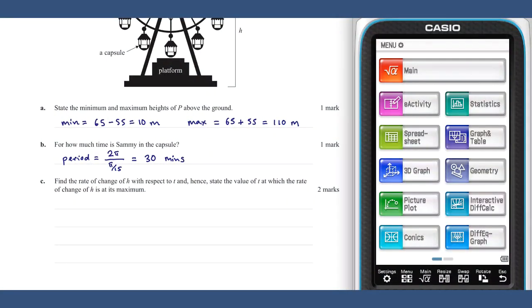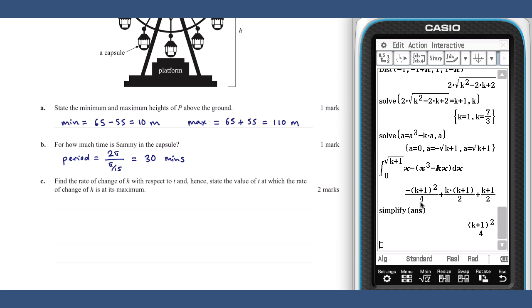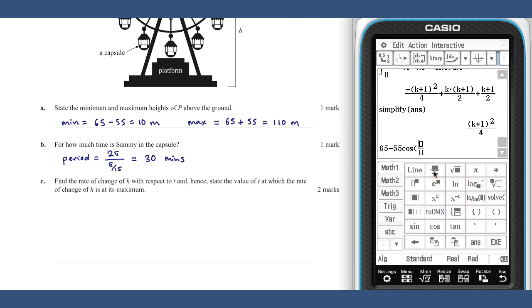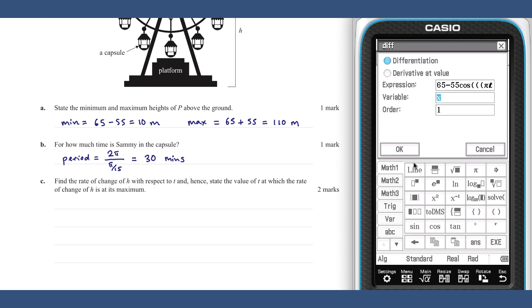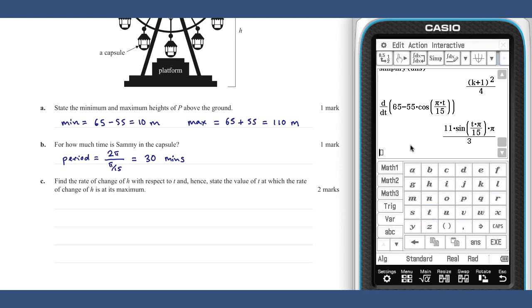Part C. The rate of change of h with respect to t is required. This is the derivative h dash t. I'm going to find an expression for this using my class pad. Now that we have an expression for the rate of change, the question asks us to find the value of t at which the rate is at its maximum.